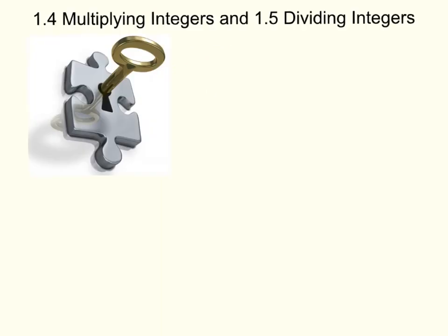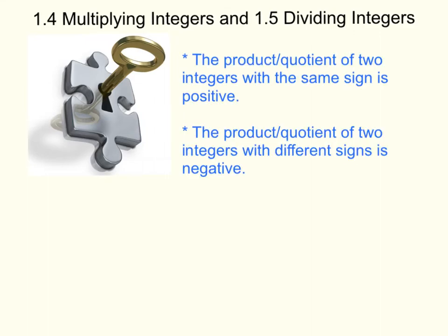In Sections 1.4 and 1.5, you're going to be multiplying and dividing integers. Remember: product is the answer to a multiplication problem, and quotient is the answer to a division problem. The product or quotient of two integers with the same sign is positive, and the product or quotient of two integers with different signs is negative.